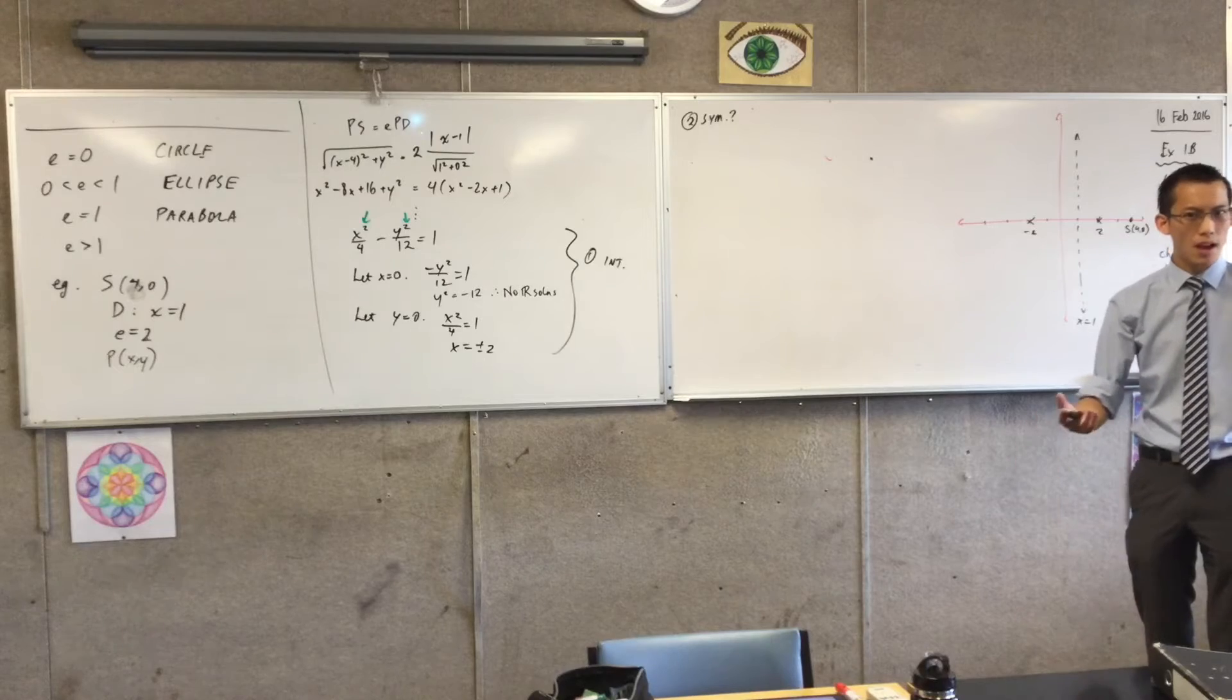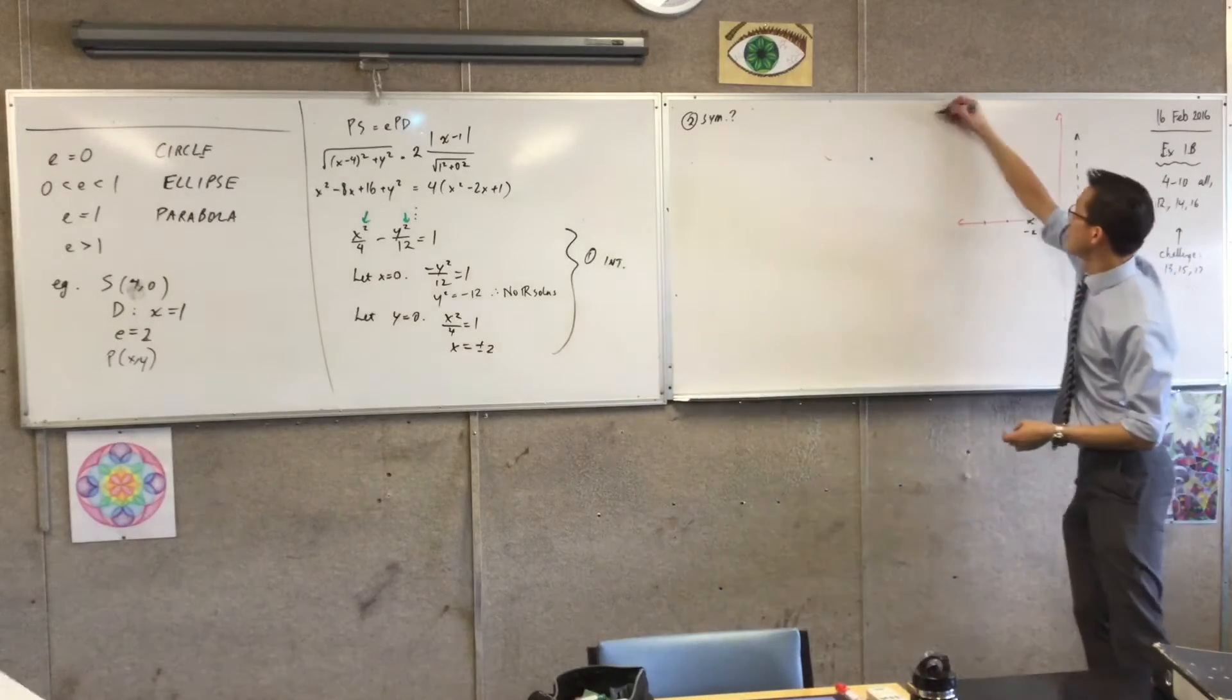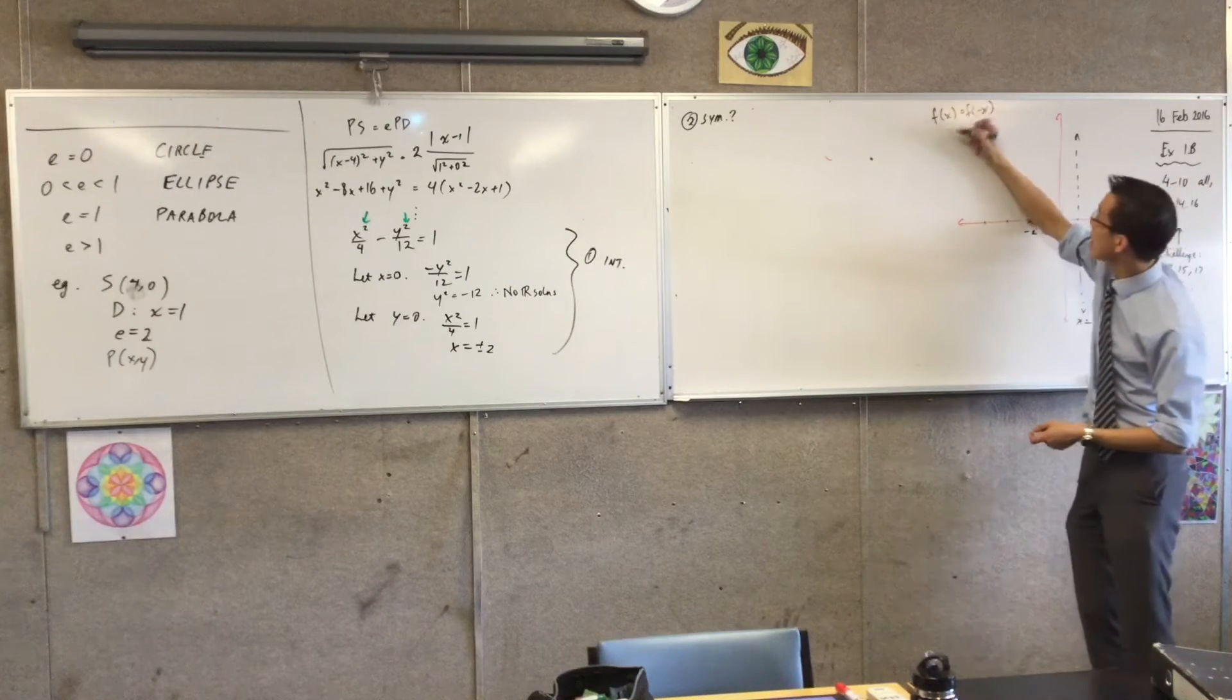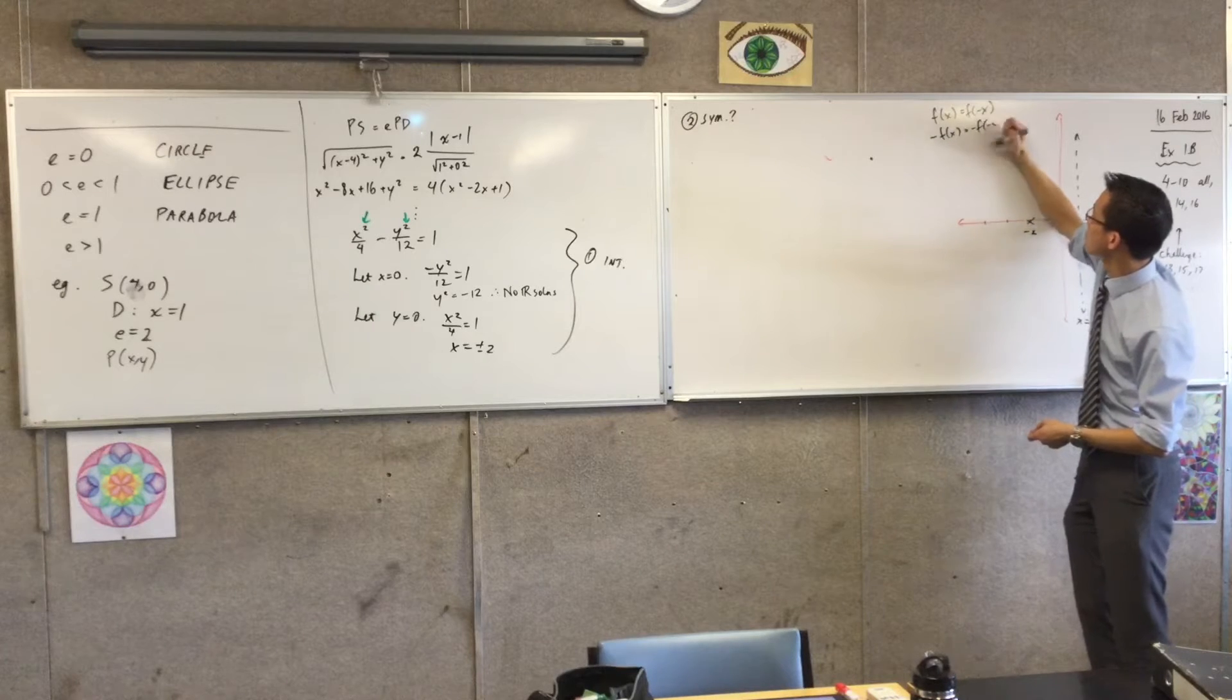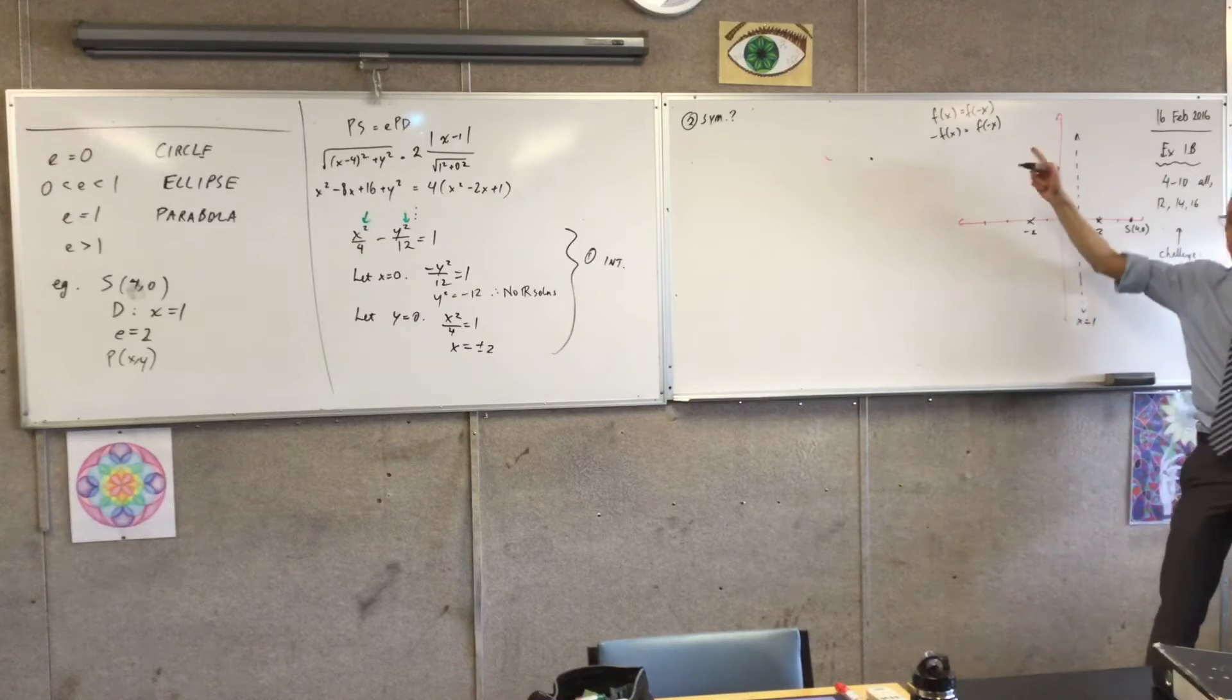Do you mean x to minus x? Yeah, I want to... I need a definition for... Like, this is what would give me even symmetry, right? And this is what would give me odd symmetry. Right? So if I want this, what I need is everything as a function of x.